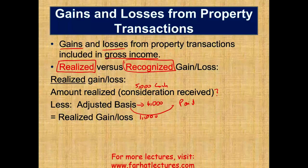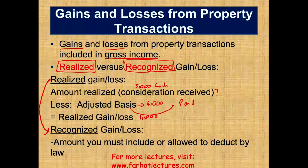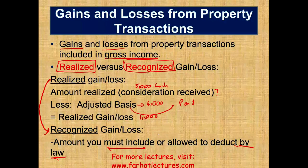Now let's talk about recognized. Notice the difference — realized versus recognized. We know you realized $1,000. The next thing you ask yourself is: what is the amount I need to recognize? Recognized is the amount you must include on your taxes by law. For the sake of this example, you're going to have to include the full $1,000. You must include it in your income because you sold this car — you don't have an option.